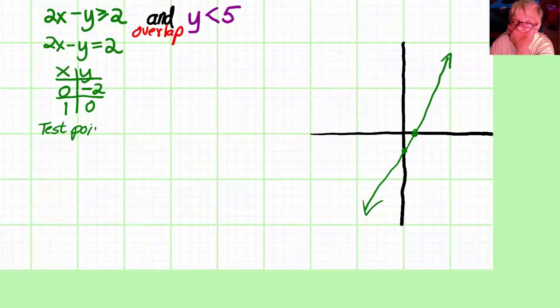The test point is going to be (0,0) because the line is not going through (0,0). Now I rewrite my inequality: 2x minus y is greater than or equal to 2. And I test the inequality.